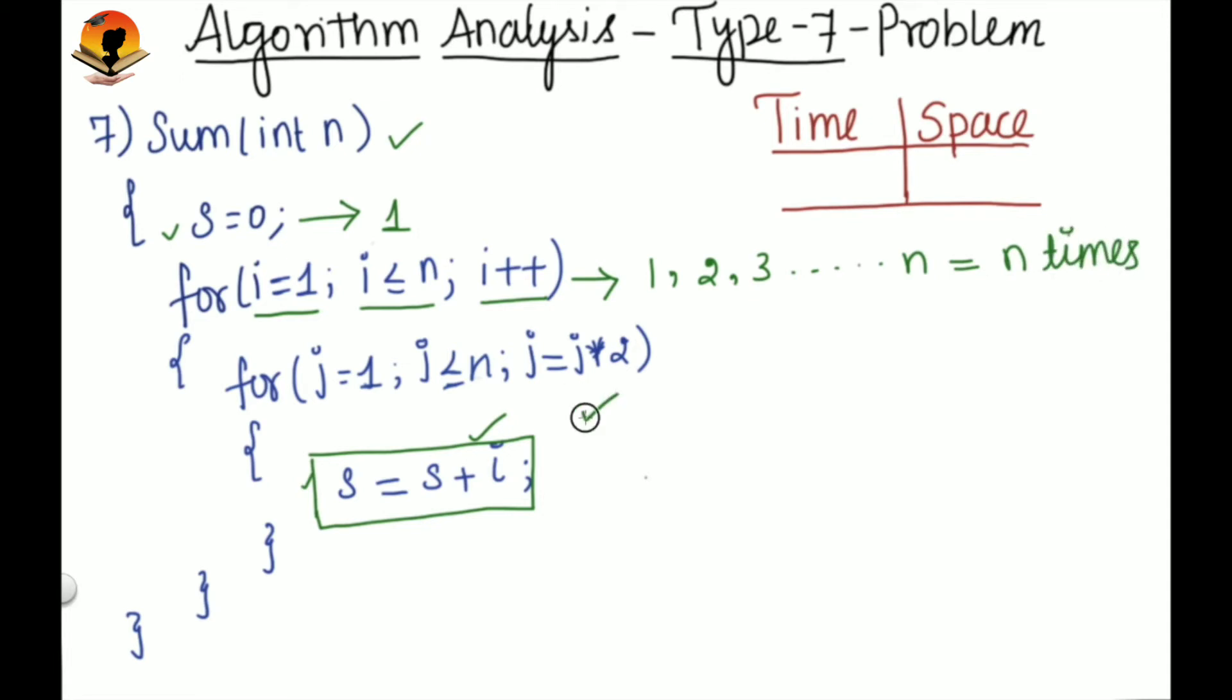And then this inner loop will run log n times. See, this type of problem we have already discussed in lecture 4, that is when the loop variable is multiplied by 2. If you want to know how it is log n and why it is log n, then check it out in the playlist and watch that video.